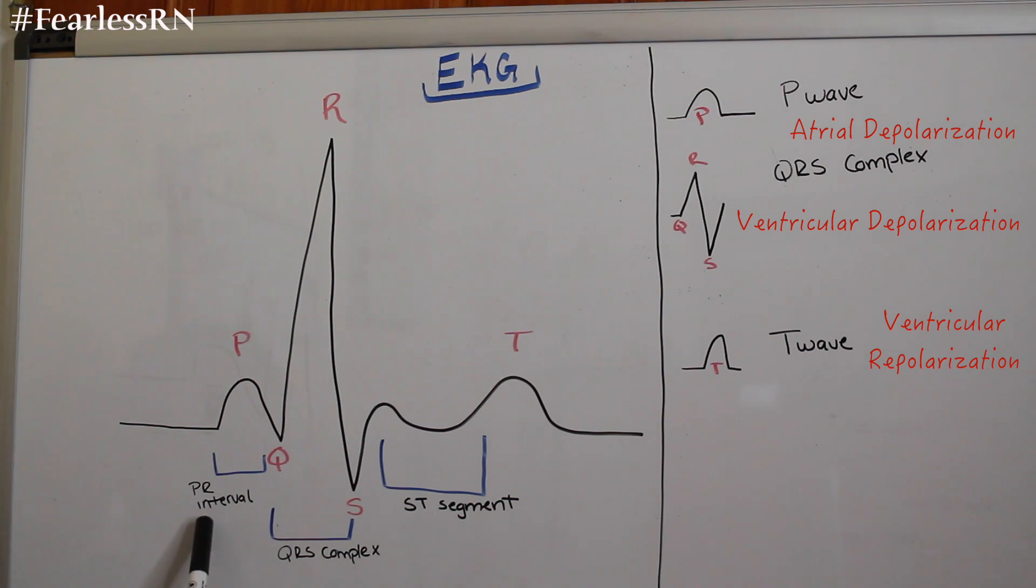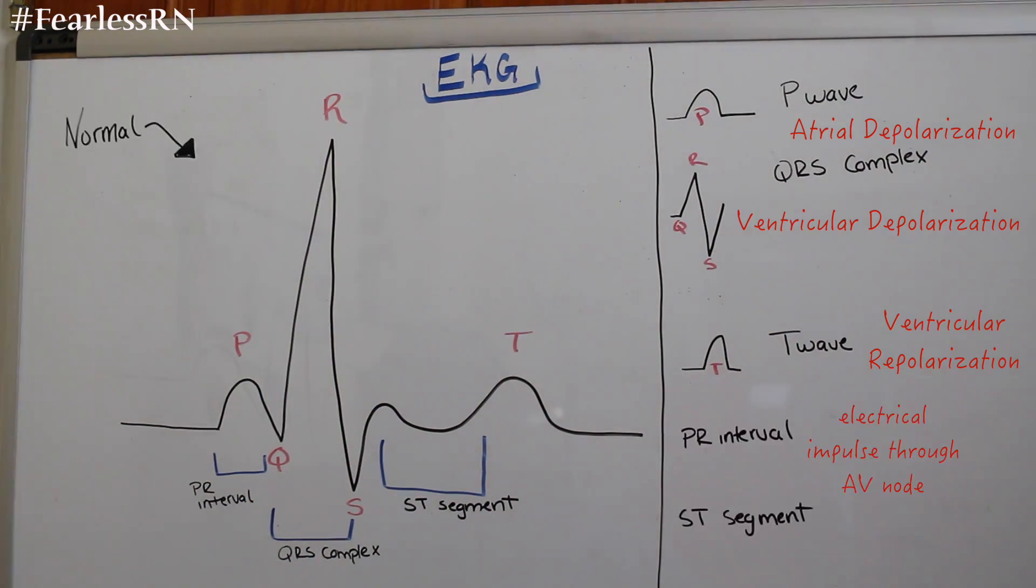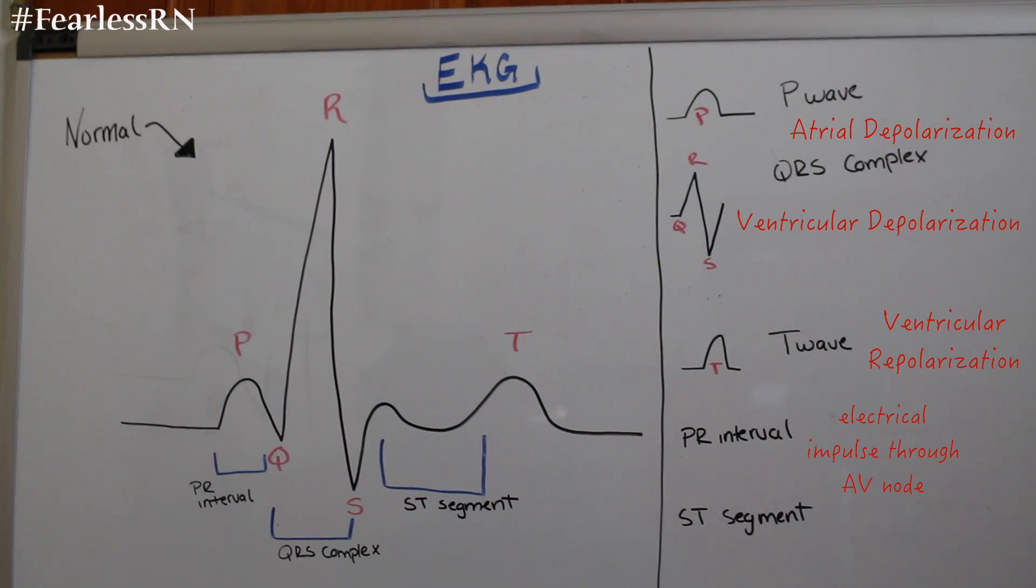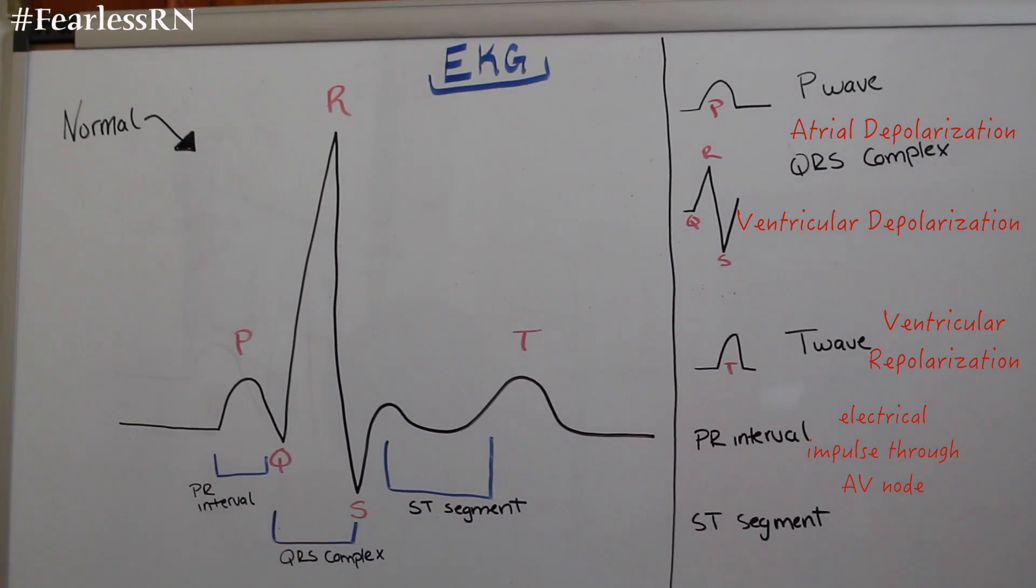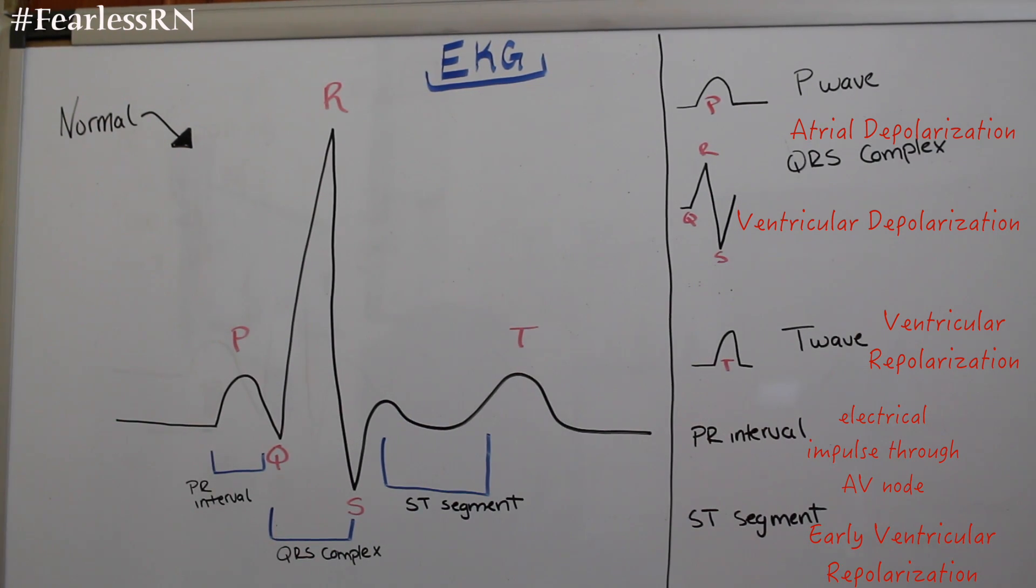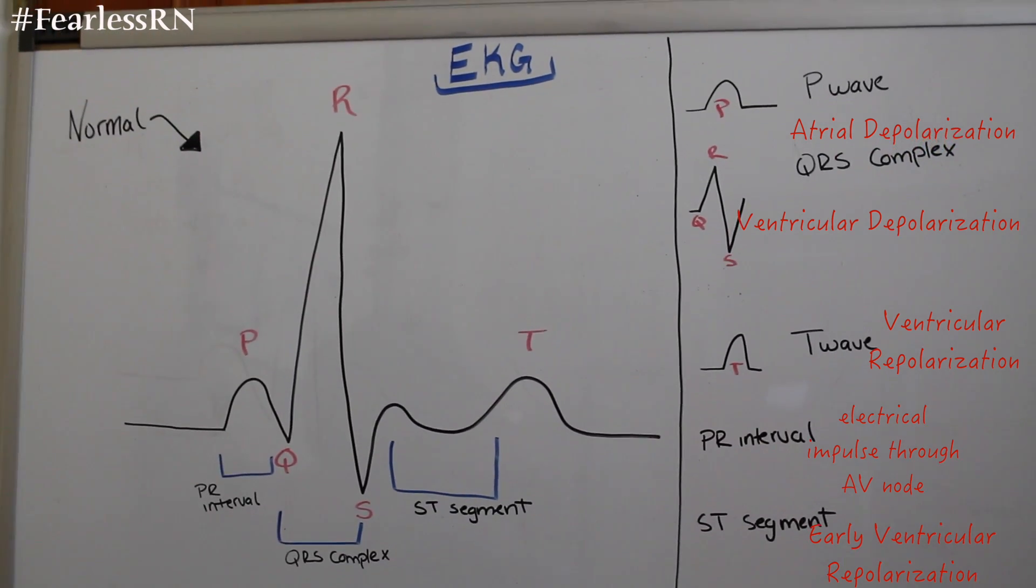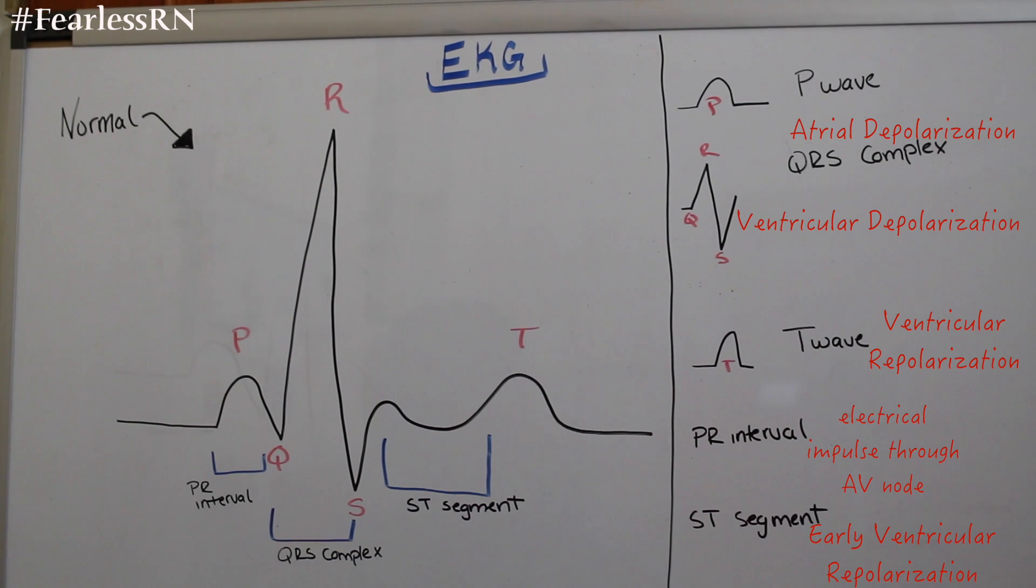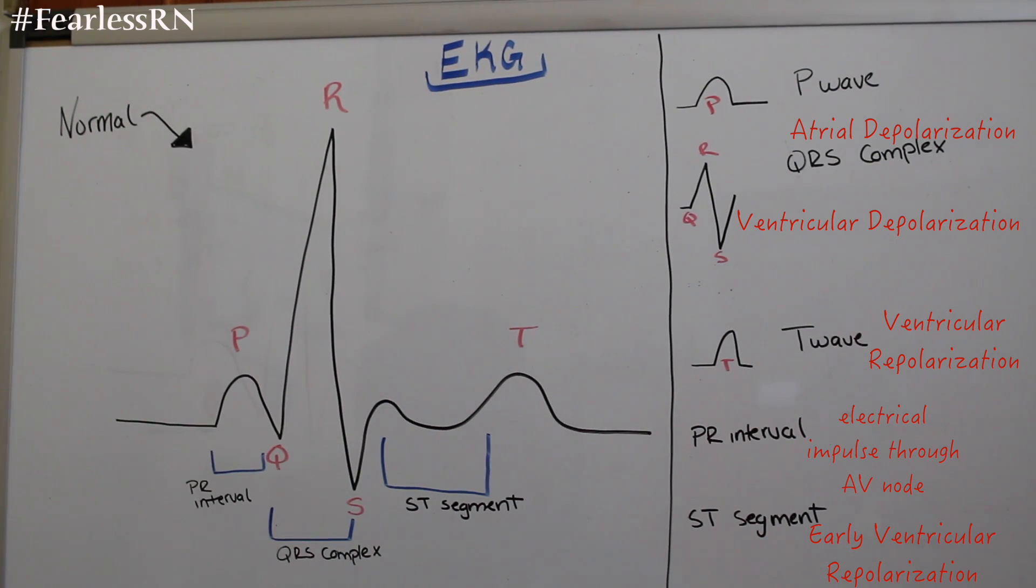And let's talk about the PR interval. Represents the passage of impulse through the AV node. Normal is 0.12 to 0.20 seconds. And then the ST segment represents early ventricular repolarization. So when the ventricles are relaxing early.